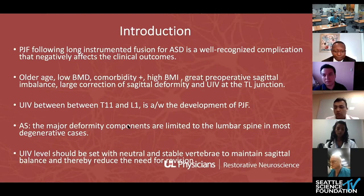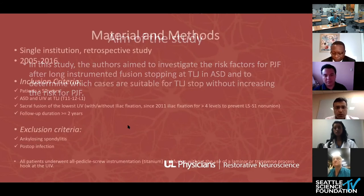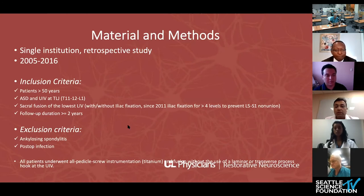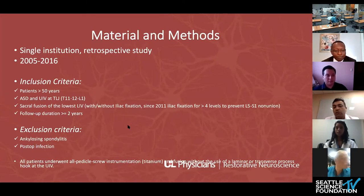Based on this background, the authors aimed to investigate risk factors for proximal junction failure after long instrumented fusion in this patient population. This is a single institution retrospective study spanning 2005 to 2016. Inclusion criteria: patients more than 50 years of age with adult spinal deformity, UIV at the thoracolumbar junction defined as T11, T12, or L1, sacral fusions with or without iliac fixation. After 2011, they started doing iliac fixation in patients requiring more than four levels of fusion to prevent L5-S1 nonunion. Minimum follow-up was two years. Exclusion criteria included ankylosing spondylitis and postoperative infections.